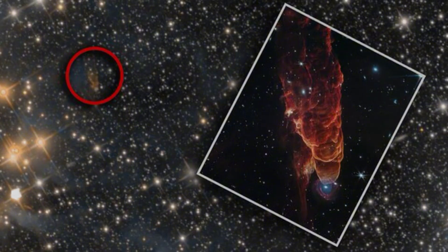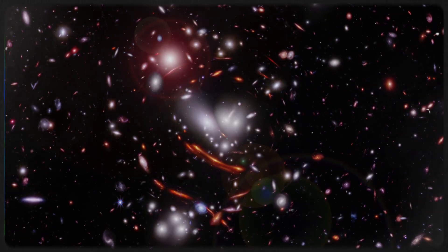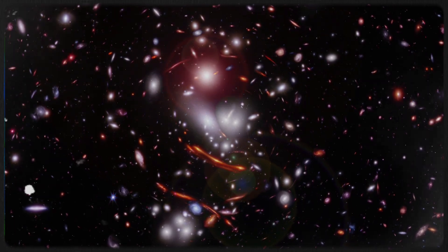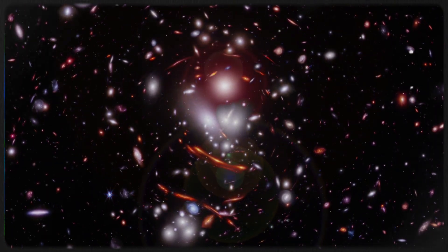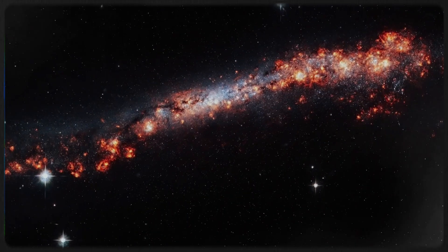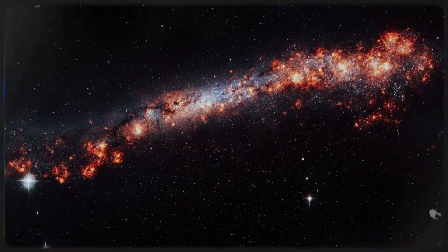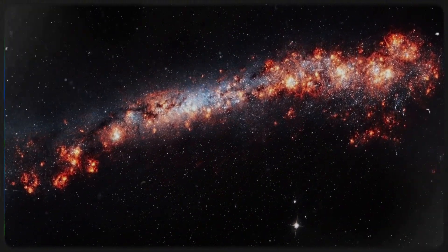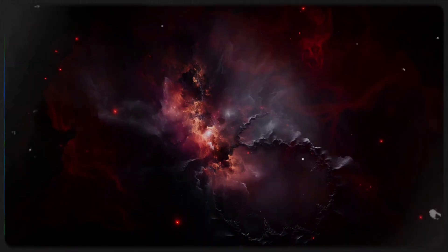But beyond the beauty lies the science. Studying HH49 by 50 has provided crucial insights into the early lives of low-mass stars, stars like our own sun. These types of jets and outflows are a natural part of stellar infancy, helping to regulate the growth of the forming star and shape the environment around it.